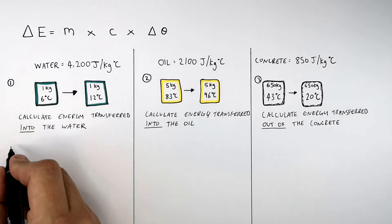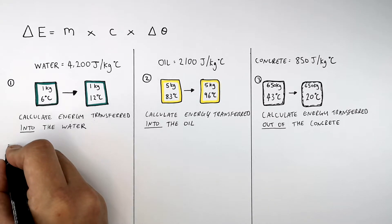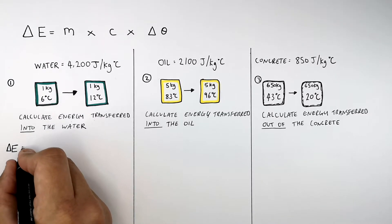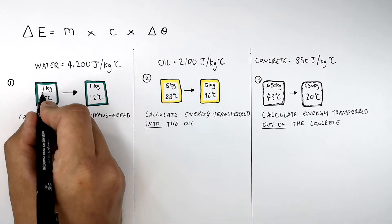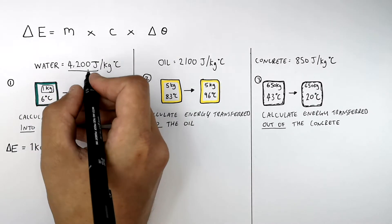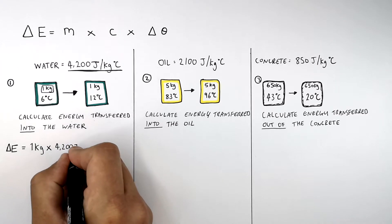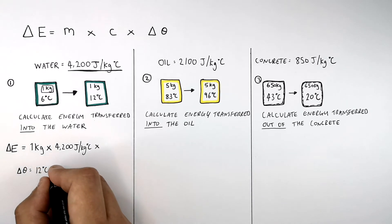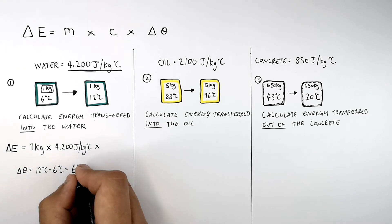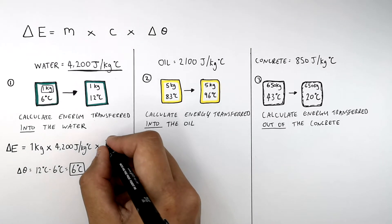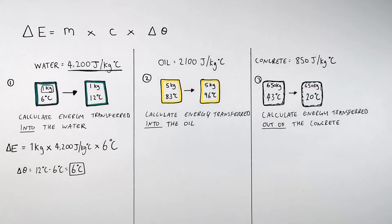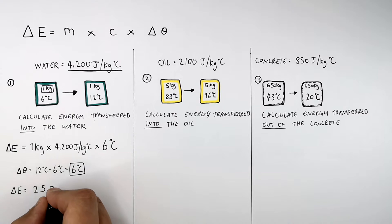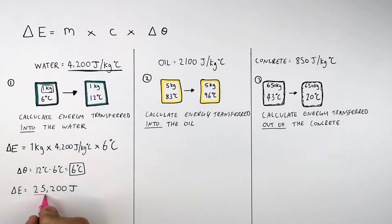To increase the temperature of an object from 6°C to 12°C, energy must have been transferred into the thermal energy store of the object. So energy transferred equals mass times specific heat capacity times change in temperature. The mass is 1 kilogram, the specific heat capacity of water is 4200 joules per kilogram per degree Celsius, and the change in temperature is 12 minus 6, which equals 6°C. So 1 × 4200 × 6 = 25,200 joules of energy.